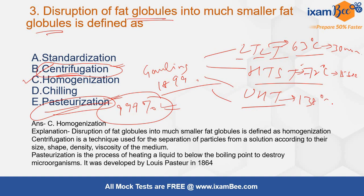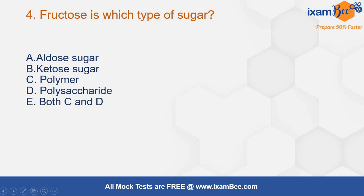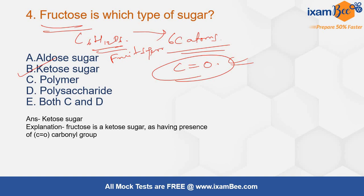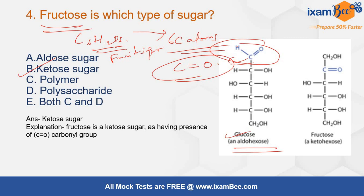The next question is: fructose is which type of sugar? Options are aldose sugar, ketose, polymer, polysaccharide, or both C and D. Fructose is mainly a keto sugar. It is made up of 6 carbon atoms and has a keto group (C=O group) present in its structure. Its chemical formula is C6H12O6, similar to glucose, and it is also known as fruit sugar. Looking at the structures: glucose has an aldehyde group (CHO), so it is an aldose sugar, while fructose has a keto group, so it is a ketose sugar.